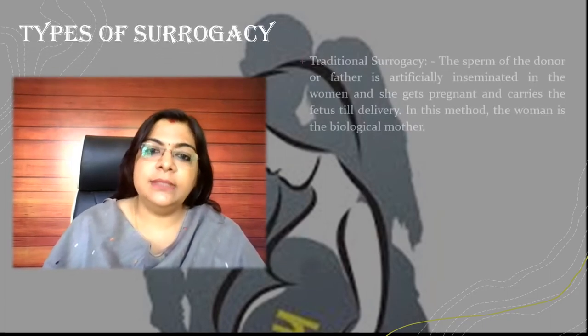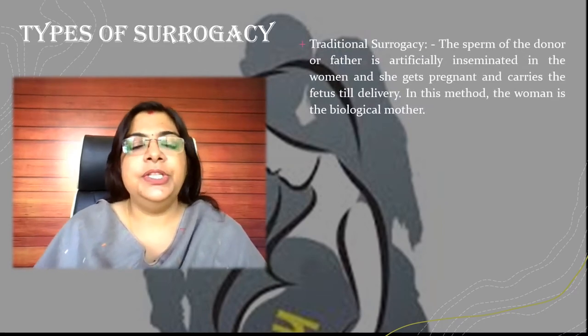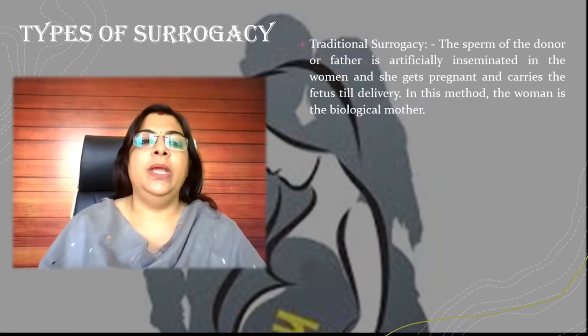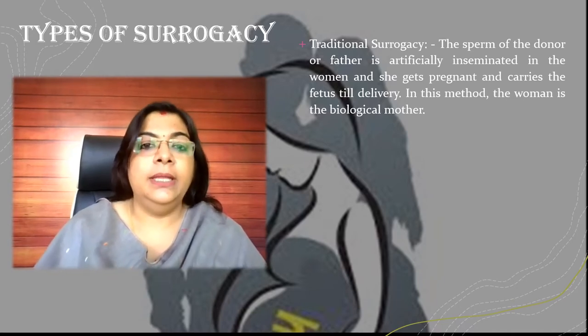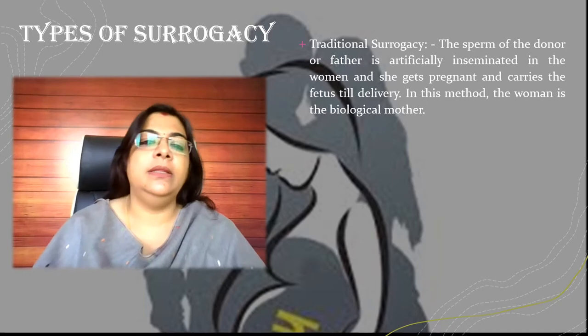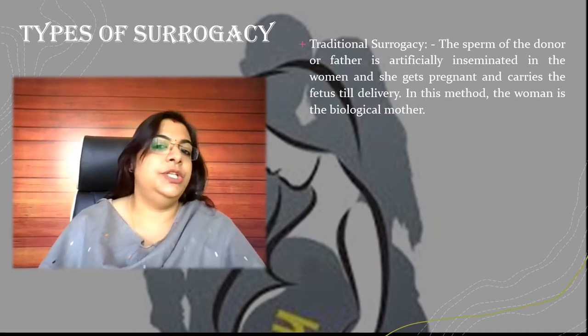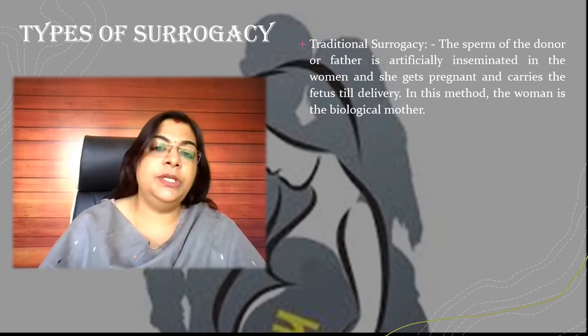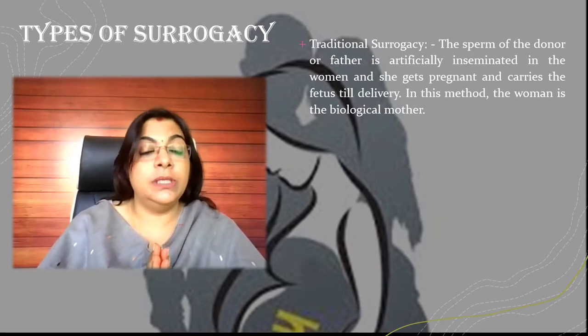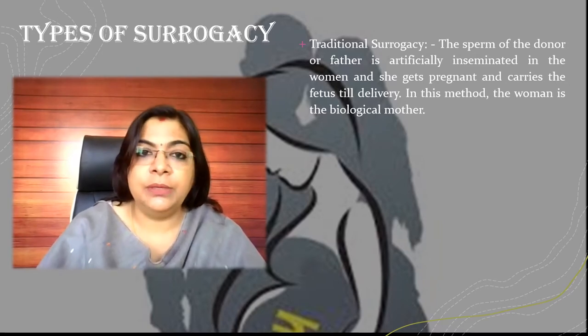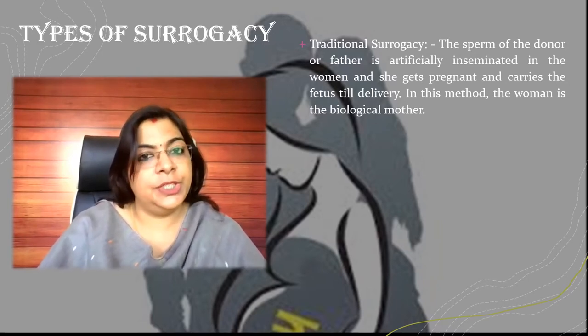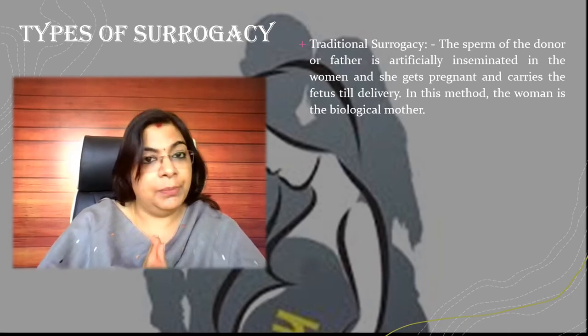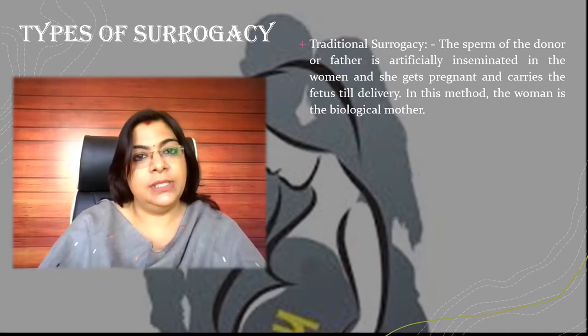Now basically there are two types of surrogacy. The first one is traditional surrogacy — when the sperm of a father or a donor is artificially inseminated in the woman, she gets pregnant and carries the fetus till delivery. In this method the woman or surrogate mother is also the biological mother of that particular child because her egg is used.